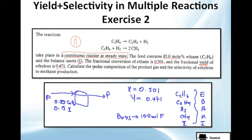What does that mean? Only ethane is being fed and inerts are just there. The fractional conversion is 0.501 and the fractional yield, we have seen it before and we are going to use it here, of ethane is 0.471.